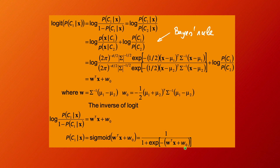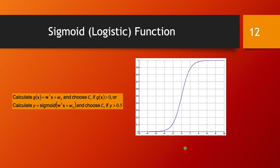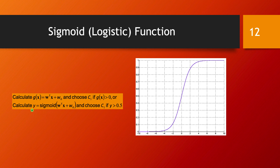The reason we look at the inverse logit, leading to the sigmoid function, is that we can frame our classification decision as follows: given a data point x, we calculate the discriminant g(x) = W^T x + W_0 and choose class C1 if this is larger than zero, and C2 otherwise. Equivalently, we calculate the sigmoid of this linear expression and choose C1 if y is larger than 0.5, and C2 if y is less than or equal to 0.5.